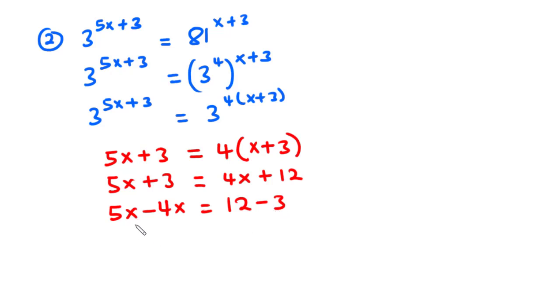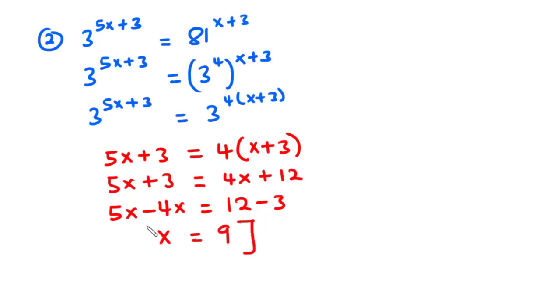Now 5x minus 4x is x, and x is equal to 12 minus 3, which is equal to 9. So the value of x is equal to 9.